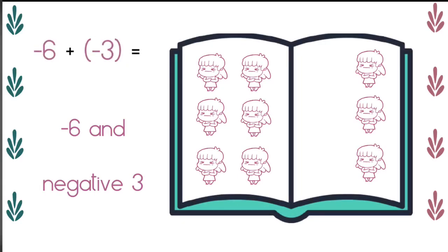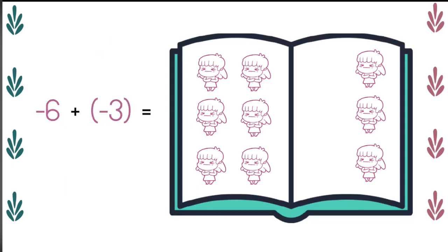And our problem can be rewritten as negative six plus negative three. When I have all negative, I just total them up and I end up with negative nine or nine unhappy.